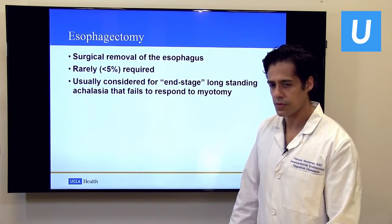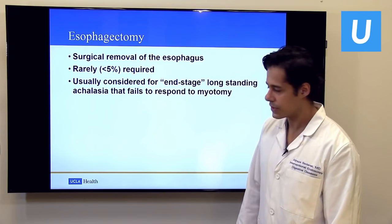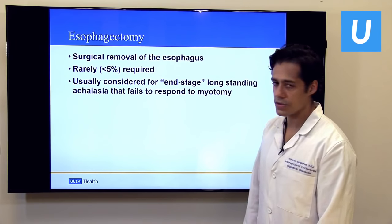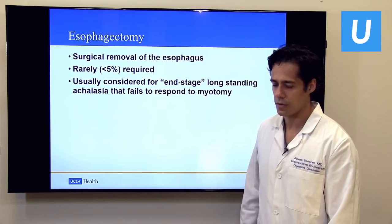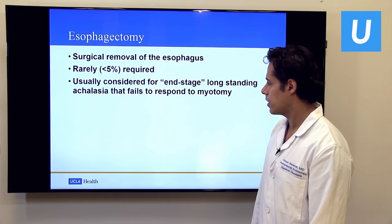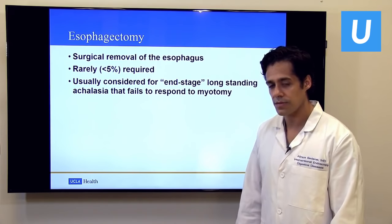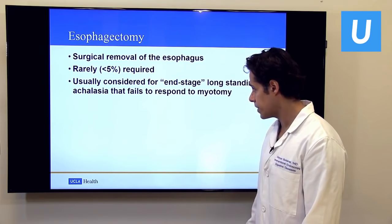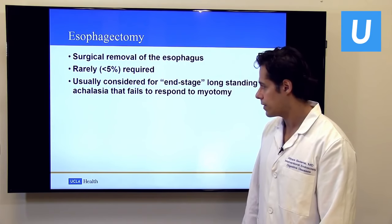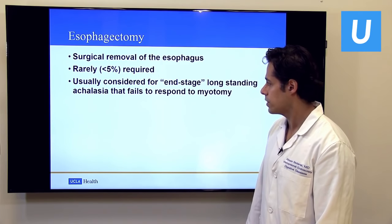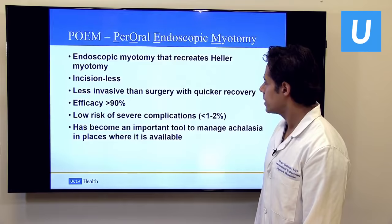As a last resort, a very small minority of patients with severe, dilated, tortuous end-stage sigmoid esophagus may require surgical removal of the entire esophagus with the stomach reconnected higher in the chest. This major operation is only considered after other interventions have failed. At UCLA, our thoracic surgeons have excellent outcomes for patients who require it.